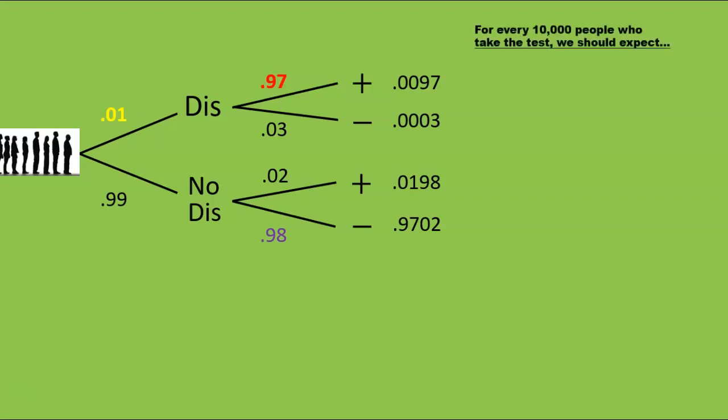So, for every 10,000 people who take the test, we should expect 97 to go along the top path. Why 97? Because 0.0097 of 10,000 is 97. We just moved the decimal place over by four positions. Now, who are these 97 people? They tested positive, as they should have, because they do have the disease. So, these are 97 true positives.